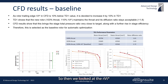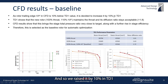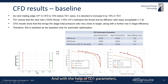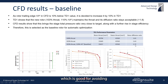We then looked at the RVT star at the rotor trailing edge in CFD, which was found to be 10 percent lower than the TD1 setting, so we raised it by 10 percent in TD1. With the help of TD1 parameters we were able to ensure that this doesn't change the throat and that the diffusion ratio also remains below 1.8, which is good for avoiding flow separation.